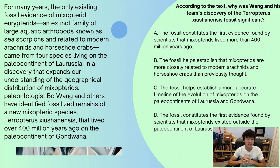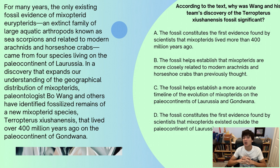For many years, the only existing fossil evidence of the mixopterid eurypterids — an extinct family of large aquatic arthropods known as sea scorpions, related to modern arachnids and horseshoe crabs — came from four species living on the Paleocontinent of Laurussia. In a discovery that expands our understanding of the geographical distribution of mixopterids, paleontologist Bo Wang and others identified fossilized remains of a new species, Pterygotus zschokkei, that lived over 400 million years ago on the Paleocontinent of Gondwana. According to the text, why was Wang and his team's discovery of the fossil significant? We have to search a bit since this isn't explicitly stated, but we can see that the only prior fossil evidence was found on Laurussia, and the new discovery found a species on a different Paleocontinent — expanding that understanding.